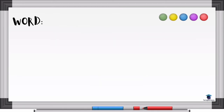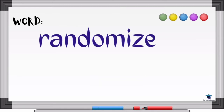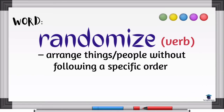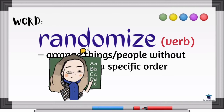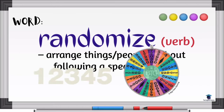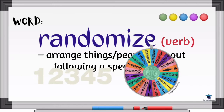Third word: randomize. The word randomize is a verb. It means to arrange things or people without following a specific order. During class attendance, our teacher always calls our names in alphabetical order — from A to Z. Randomize is the exact opposite: it doesn't matter whether names are in order or not, as long as they are arranged.